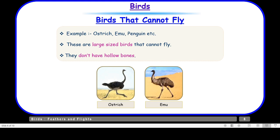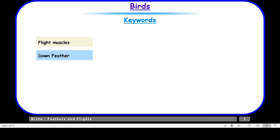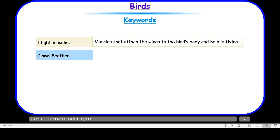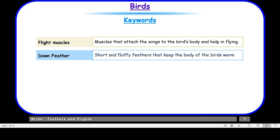Let us move on to the keywords. Flight muscles are the muscles that attach the wings to the bird's body and help in flying. Down feathers are short and fluffy feathers that keep the body of the bird warm.